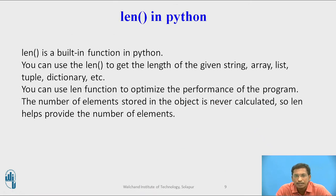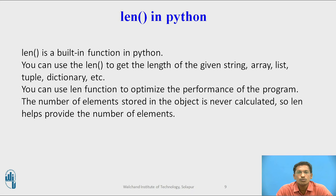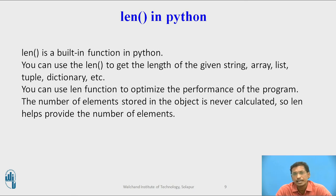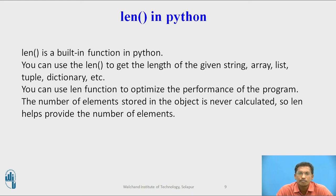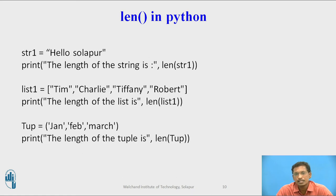The third function is the len function, or length function. len is a built-in function in Python. You can use len to get the length of a given string, array, list, tuple, or dictionary. Generally, the len function is used to find out how many elements are present in a given value or variable. You can use the len function to optimize the performance of a program — it provides the number of elements present in the variable.